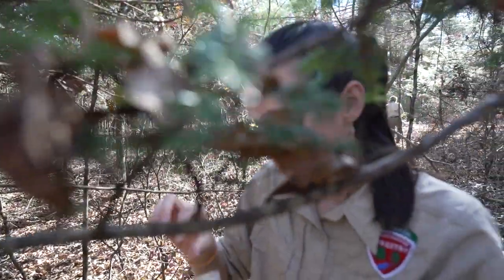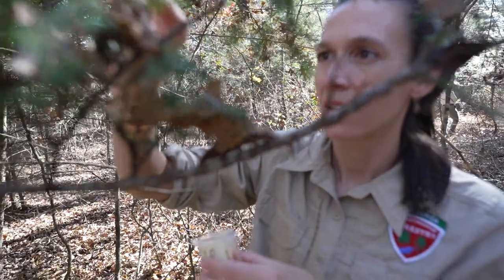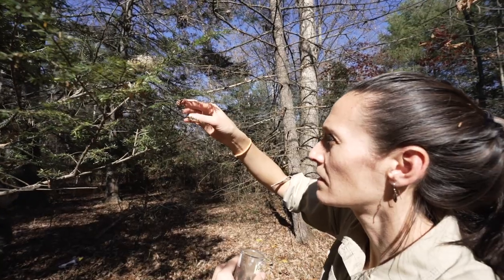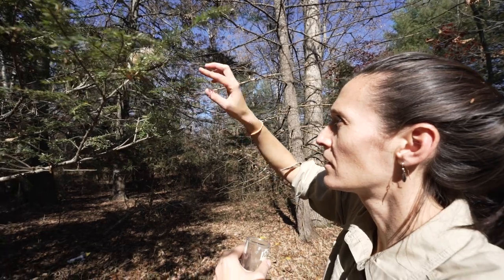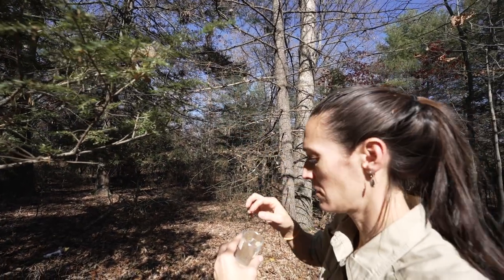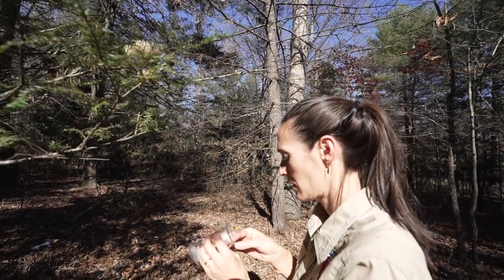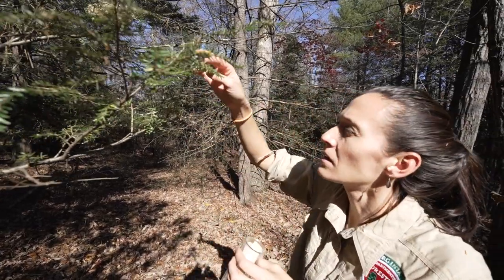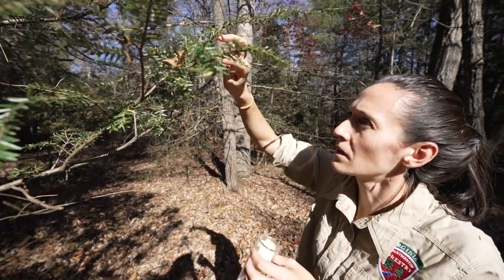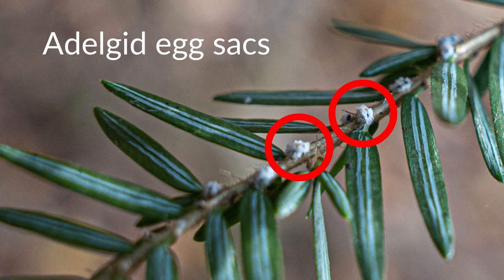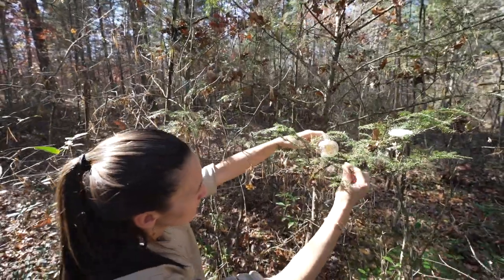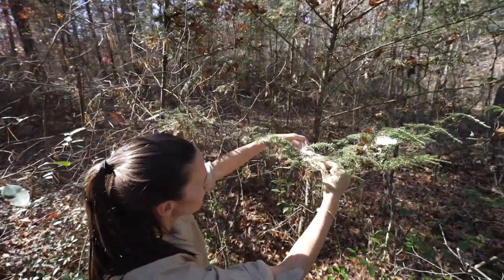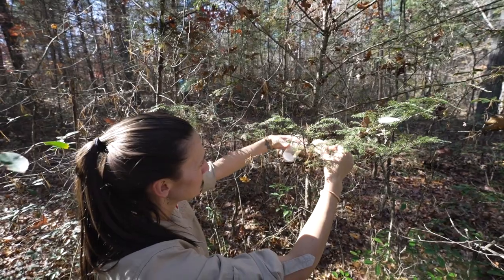If you have hemlock trees on your property, the first thing I would suggest is monitoring the trees for signs of decline. Look for needle loss, look for branch dieback, and also monitor for the hemlock woolly adelgid. It's a tiny little insect, but it does secrete a white woolly ovisac around its body that looks like small white cotton balls on the undersides of the hemlock branch. If you can reach branches, look for those adelgids to see if your tree is infested.